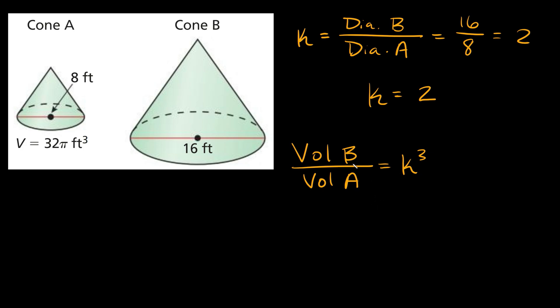Alright, great. So now that we have our formula set up, let's just plug in what we know. So first of all, we don't know the volume of cone B. So we're going to leave that as the volume of cone B. And that's going to go over the volume of cone A, which we do know.